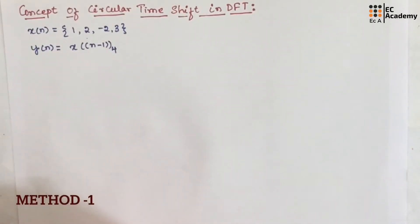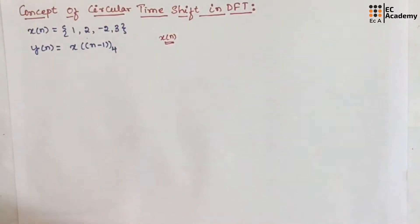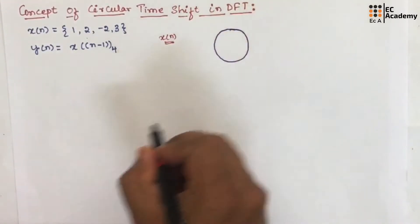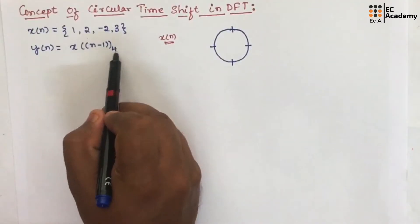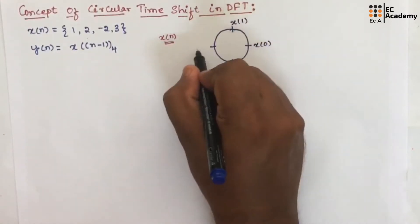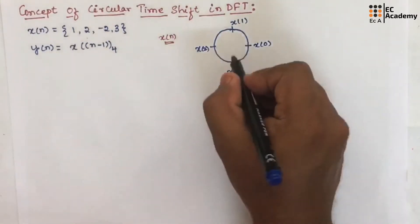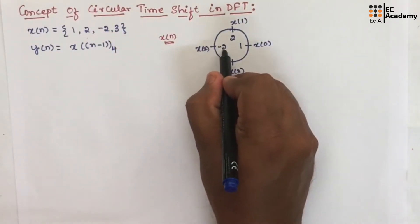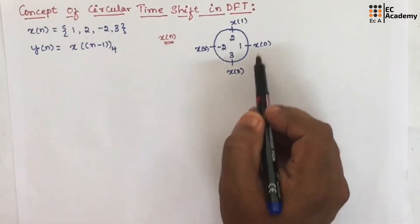First, let us represent x of n by a unit circle and divide this unit circle into 4 parts, because the length of the sequence is 4. Let us write x of 0, x of 1, x of 2, x of 3. Now x of 0 is 1, x of 1 is 2, x of 2 is minus 2, x of 3 is 3. This is the representation for x of n using a unit circle.